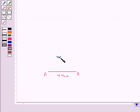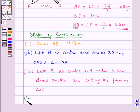So this is the arc taking B as the center and radius 3.5 cm. Let this point be point O. Then in the next step, we join OA and OB.